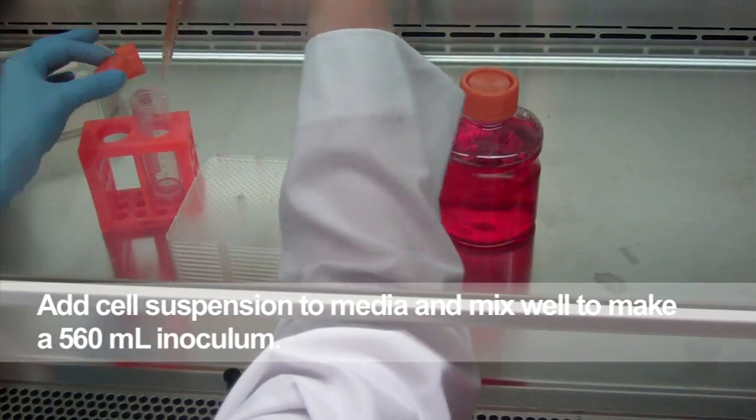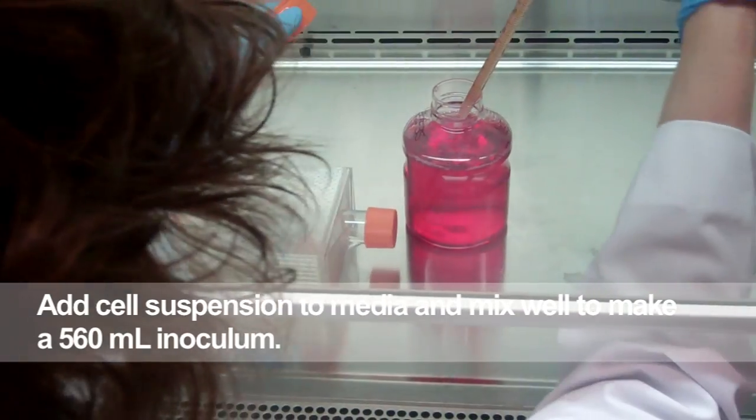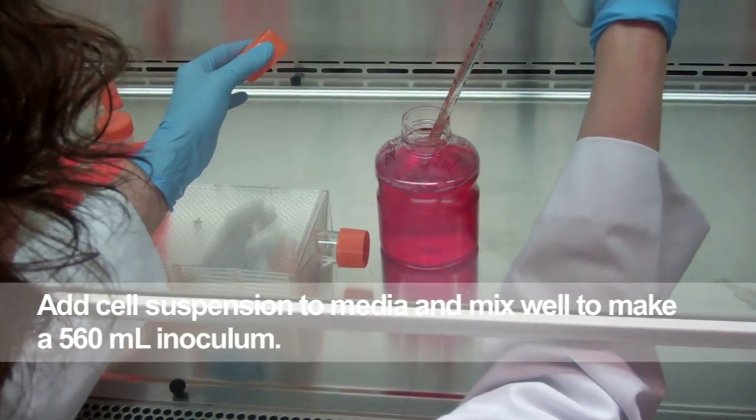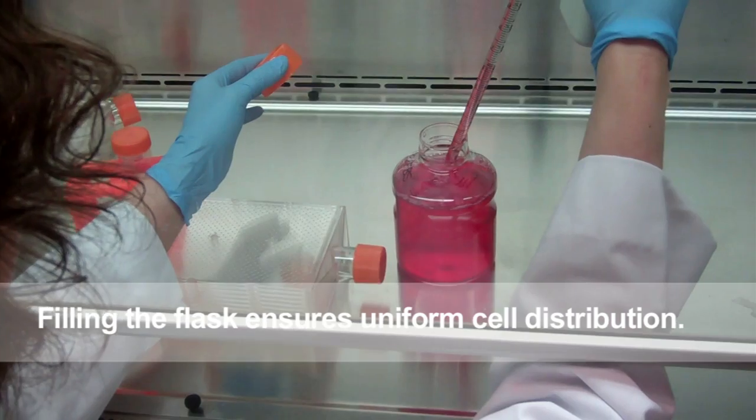To seed a hyperflask cell culture vessel, create a 560 mL inoculum of cells. By using enough media to fill the entire vessel, you'll guarantee a uniform cell distribution.